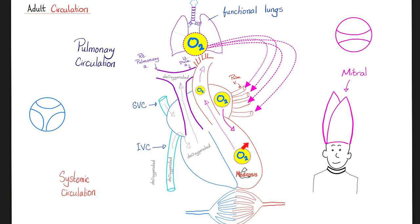Here is oxygenated blood leaving the left side of the heart going to your body. The cells will take oxygen and the cells will release carbon dioxide. Oxygen and nutrients in, carbon dioxide and waste out. This is the capillary, which is a connection between the arterial side and the venous side.